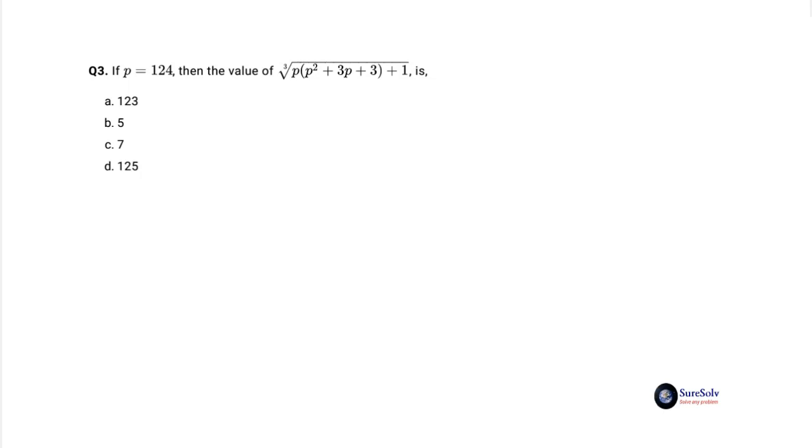The awkward expression under the cube root attracts our attention first. And without delay, we multiply p through the brackets to get p cubed plus 3p squared plus 3p plus 1 as the expression within the cube root. This is p plus 1 whole cube. After taking the cube root, it becomes p plus 1, the value 125.